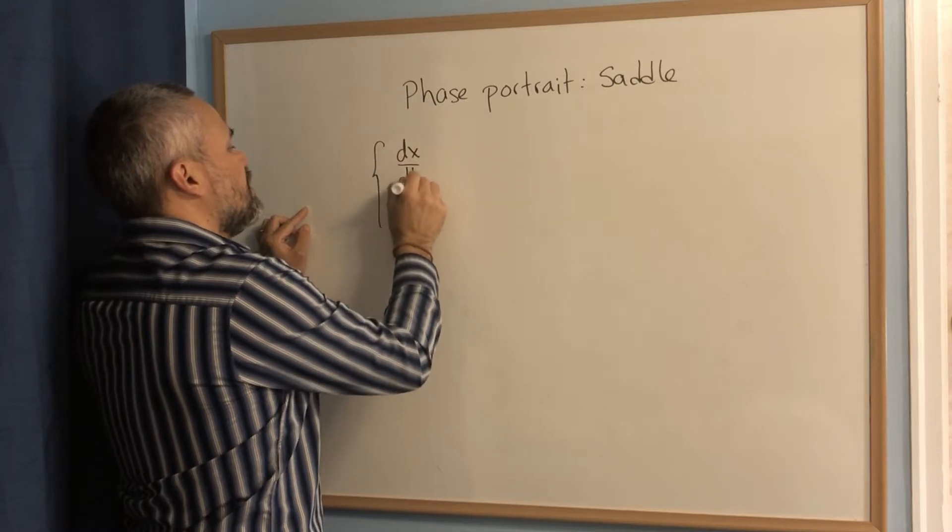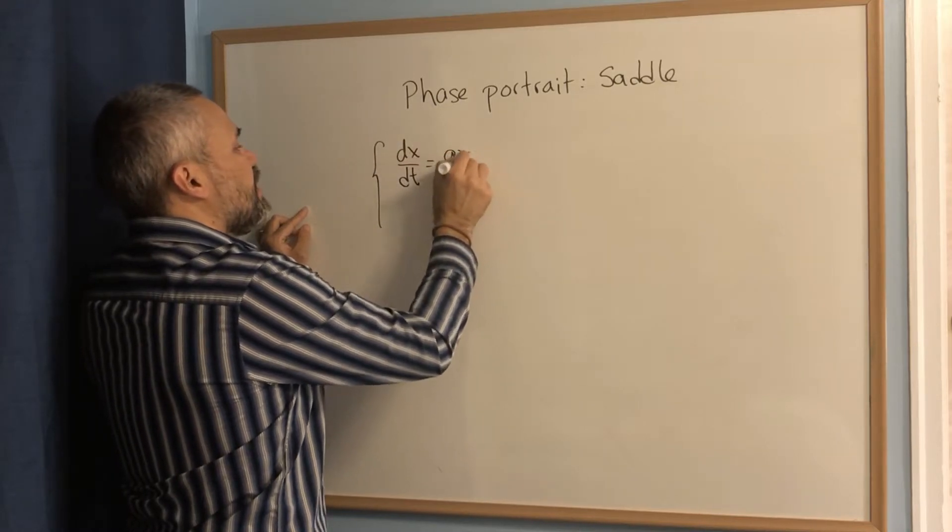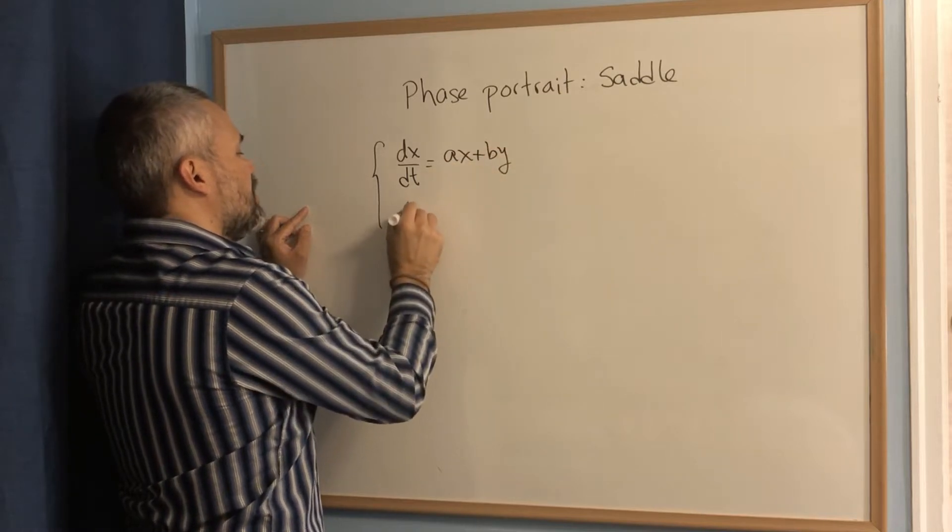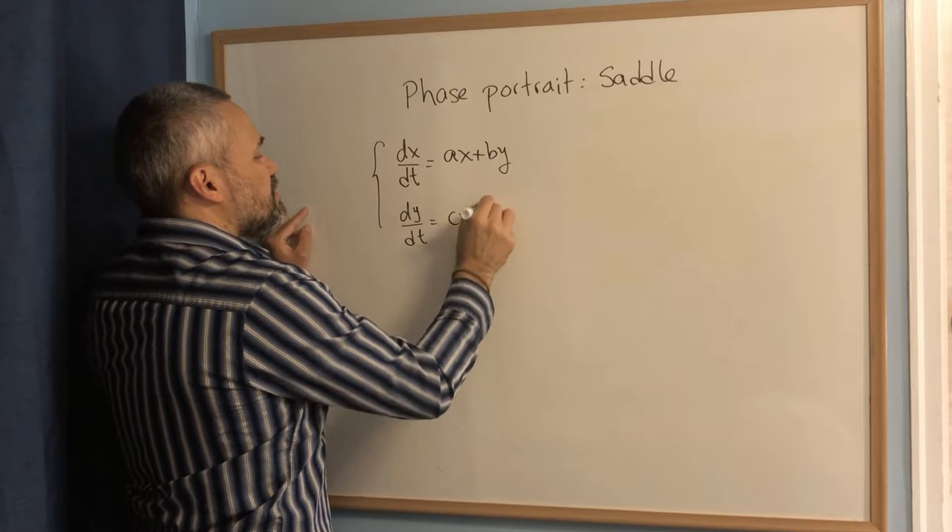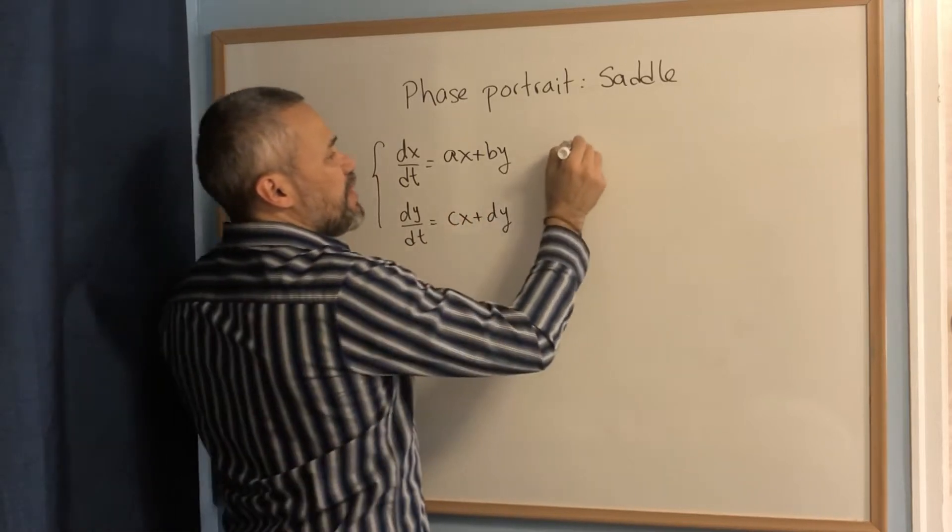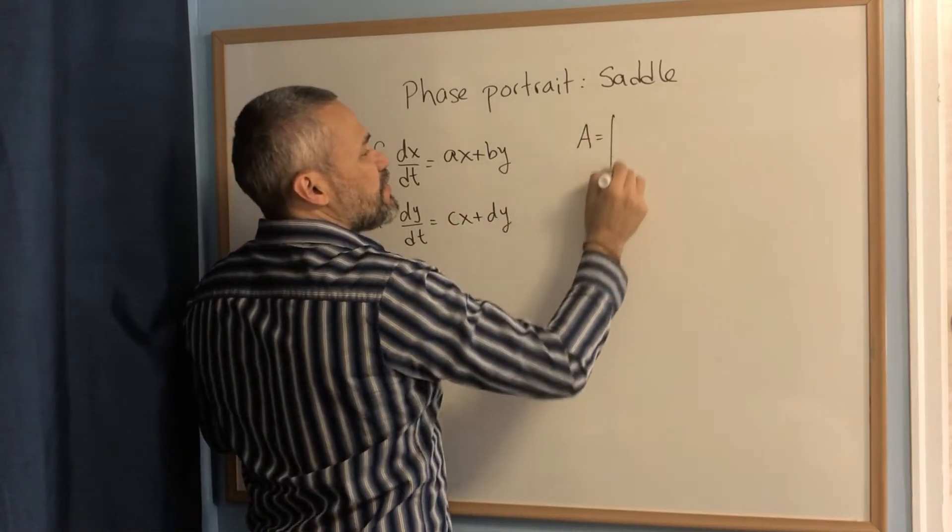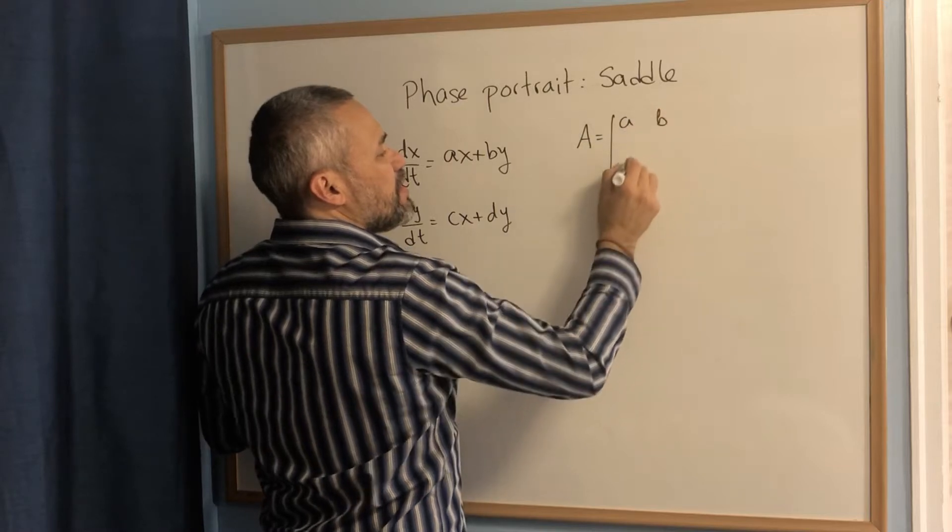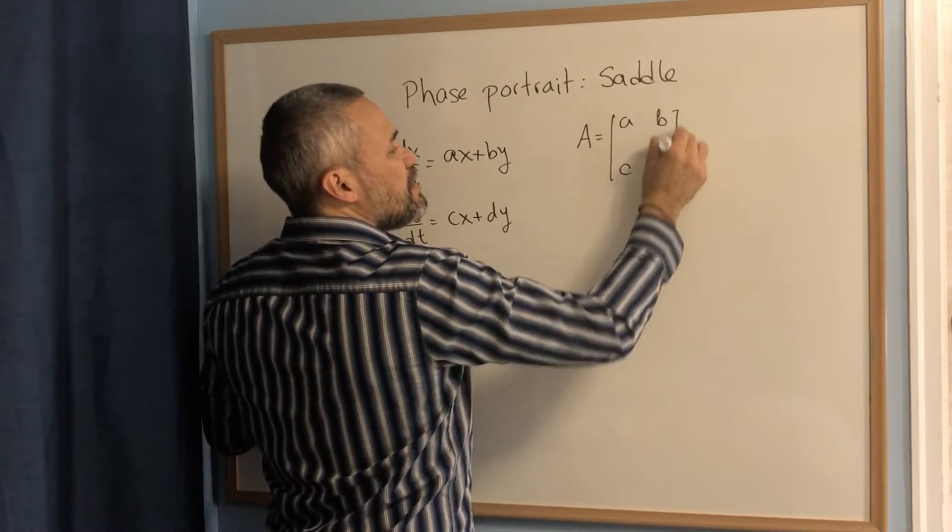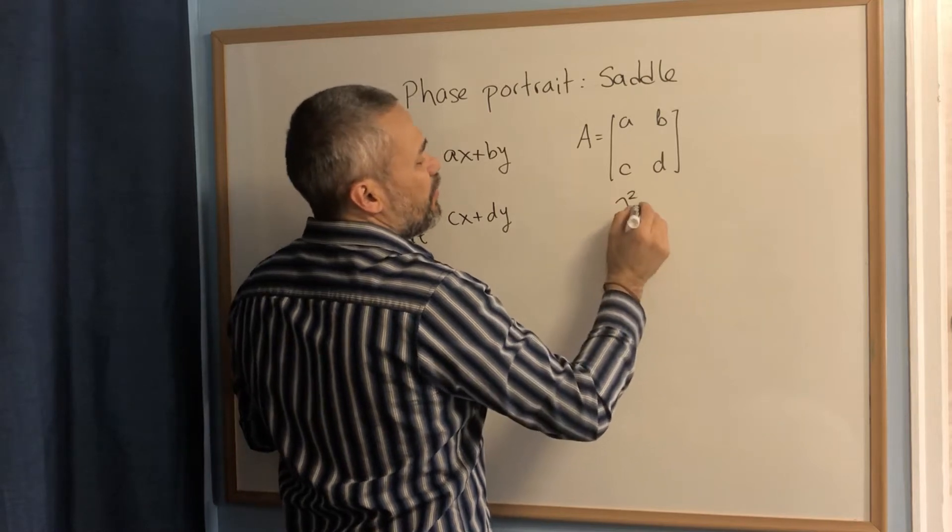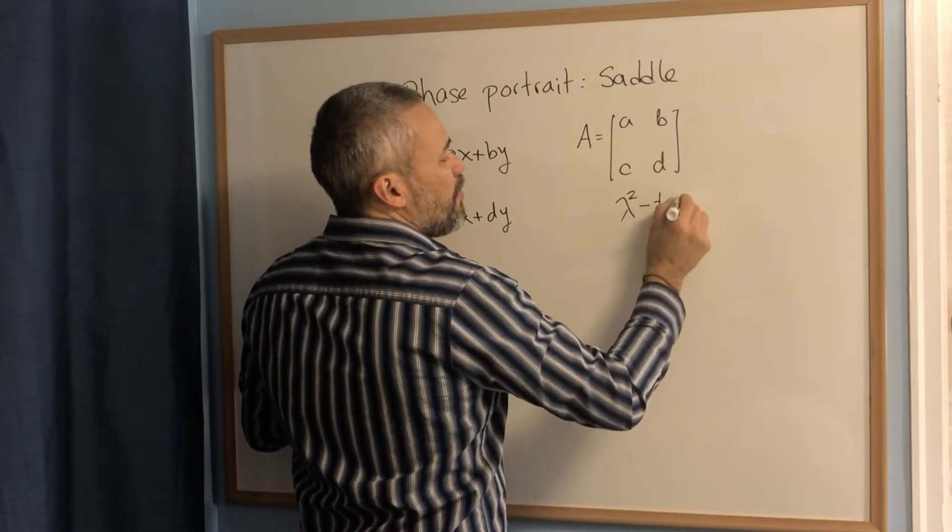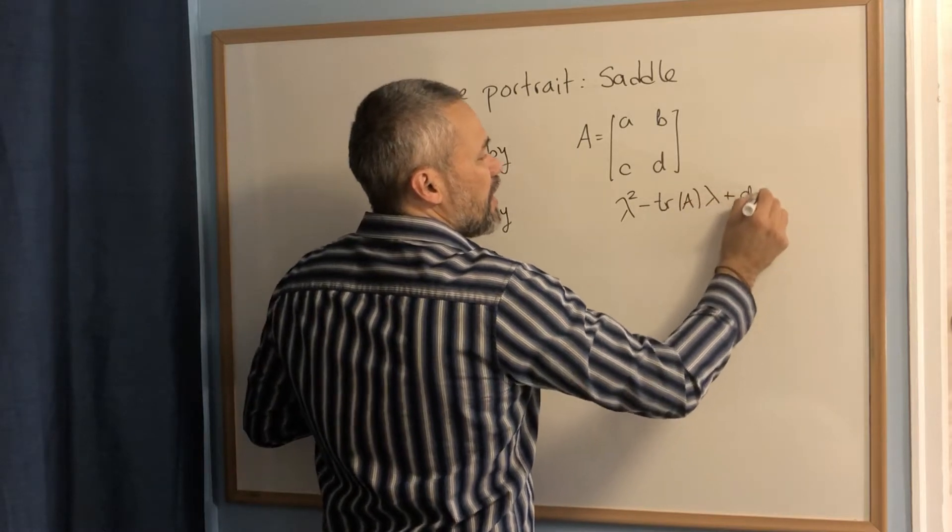dx/dt equal to ax plus by, dy/dt equal to cx plus dy. The matrix of the system is the matrix a, b, c and d and the characteristic equation is the equation lambda squared minus the trace of a times lambda plus the determinant of a equals zero.